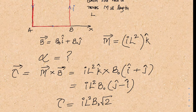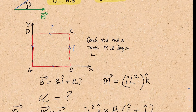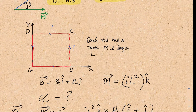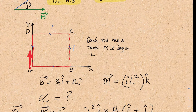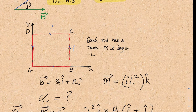If we look at j-cap minus i-cap: j-cap is in the positive Y direction, and minus i-cap is in the negative X direction. The resultant of both will come in a direction that makes a 45-degree angle — at 45 degrees between the negative X and positive Y directions.